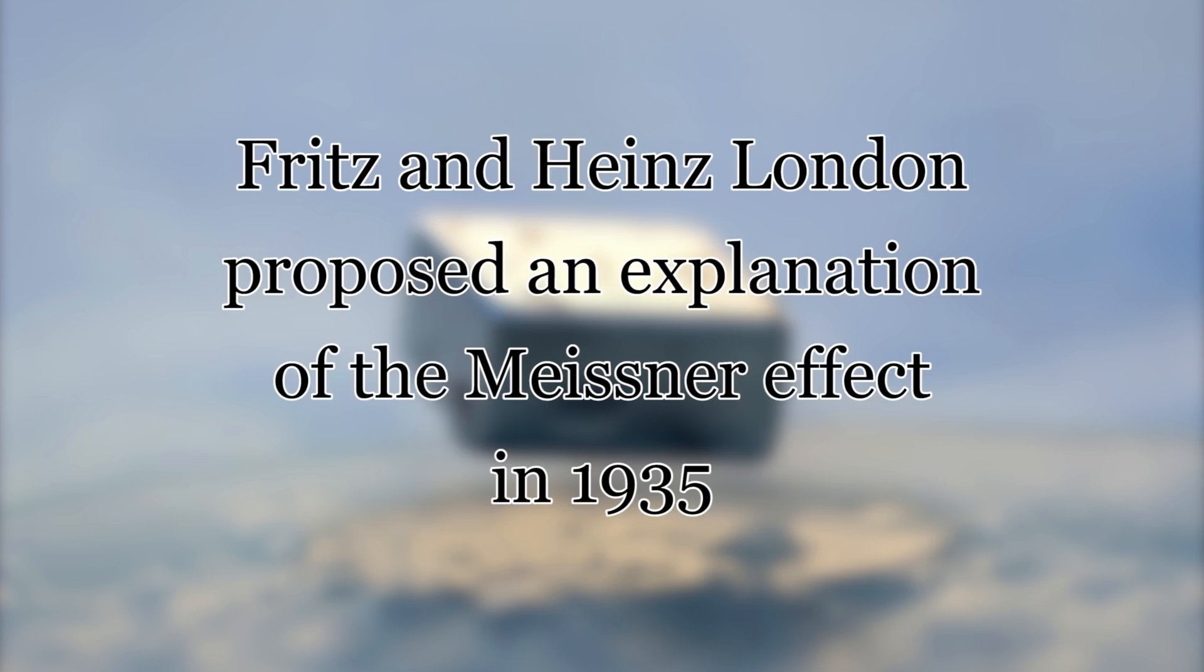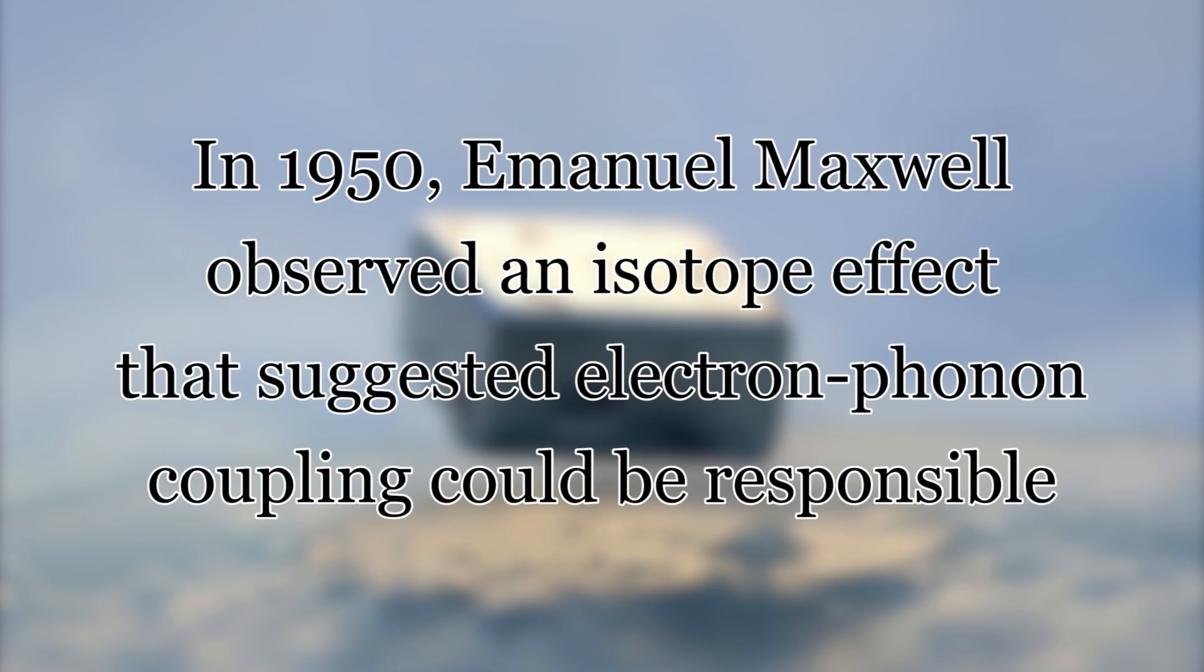The first theory to explain the Meissner effect was proposed in 1935 by Fritz and Heinz London, and derived the dependence of the induced magnetic field from the distance to the surface.